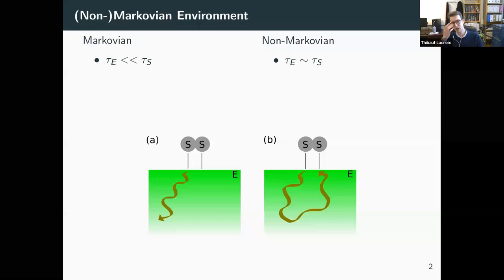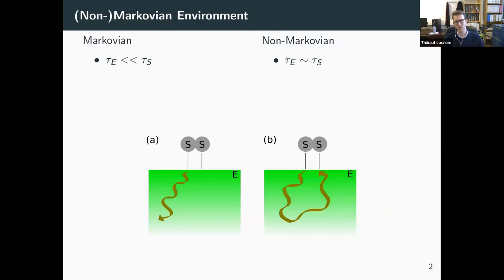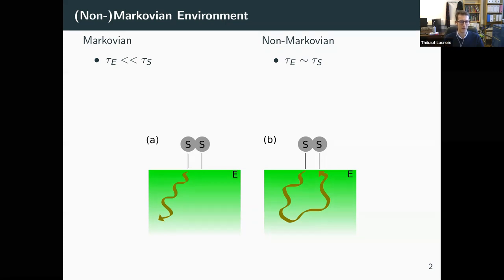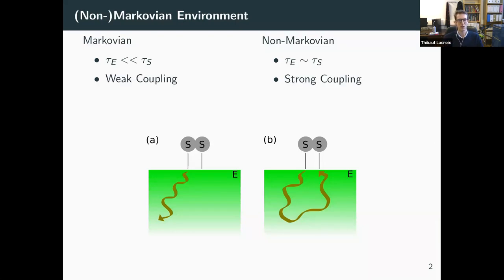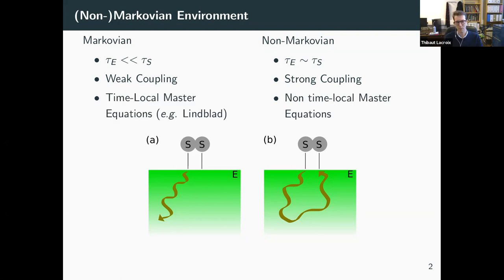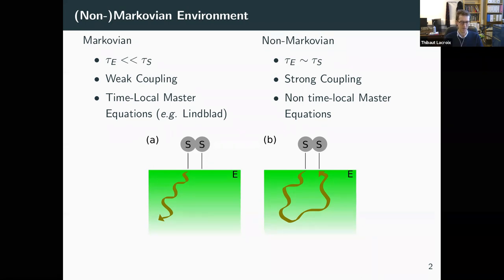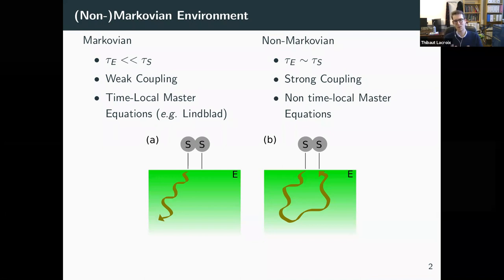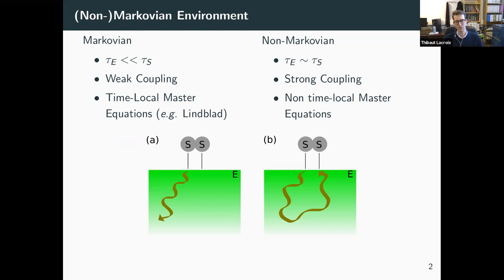In the non-Markovian case, which can happen when the timescale of the dynamics of the environment is of the same order of magnitude as the timescale of your system, you can have basically an interaction created by the system into the environment coming back a bit later on a different part of your system and influencing it. These two limits correspond — for the Markovian case when you have very weak coupling between your system and your environment, and the non-Markovian case when you have strong coupling. When you try to describe the reduced density matrix of your system with a master equation, the Markovian case is a time-local master equation, whereas the non-Markovian one requires a non-local master equation where you integrate over the past time to take into account this memory and past interaction with the system.